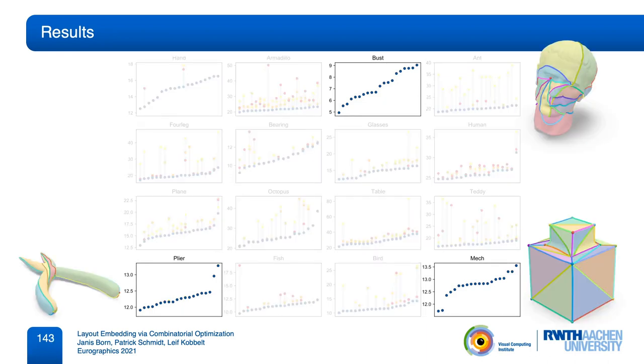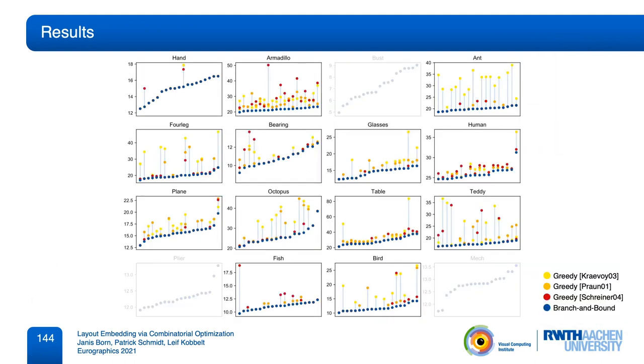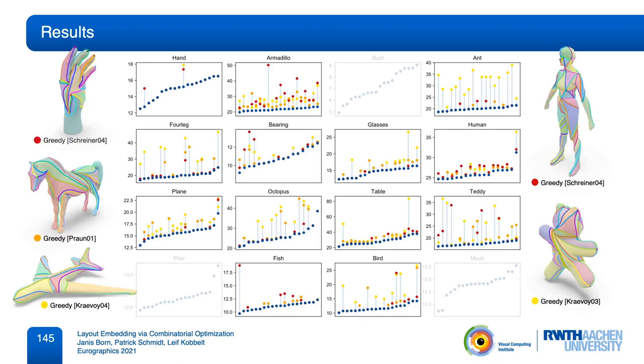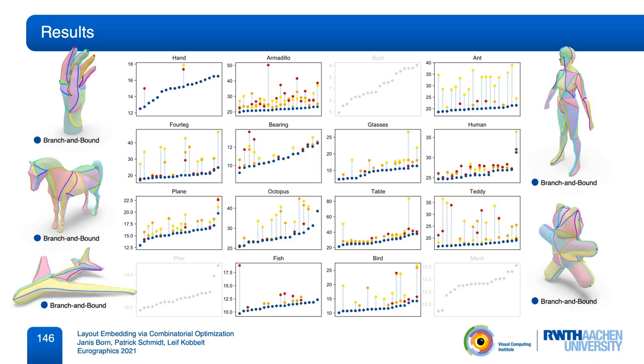In a few categories, the embedding tasks are so simple that all methods produce nearly identical results. In the other categories, greedy methods show a strong variance or unexpected outliers. These values correspond to cases where heuristics fail and produce highly distorted embeddings. We see the typical artifacts, where paths do unnecessary twists due to a wrong insertion order. In comparison, our branch-and-bound method consistently avoids such artifacts and finds embeddings that are short and natural. In several cases, all greedy methods produce results with different defects, while only the branch-and-bound method finds the expected embedding.